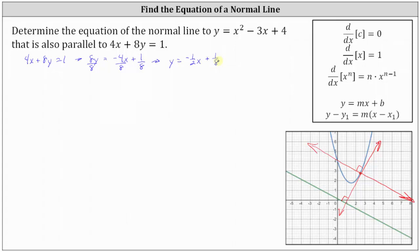Notice the slope of the green line, or the given line, is negative 1 half. Negative 1 half is also going to be the slope of the normal line to the curve that's also parallel to the given line. So m equals negative 1 half is the slope of the normal line.